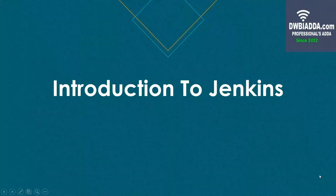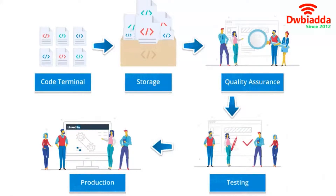Before proceeding further, we'll first discuss the traditional flow of code during a software development lifecycle. In the beginning, the code is written and then stored in storage, which could be Git or local storage. After that, the code is passed on to quality assurance, where it is tested and managed by developers. Then it is passed on to testing, where testers test the code for any faults, and once approved, it is passed on to production.